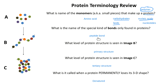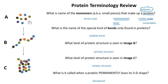Peptide bonds are what I use to build the primary structure. Looking at our three-part picture, each of the little dots represent the monomers of a protein — each represents an amino acid. There's no protein structure in image A because it's just a group of amino acids. When I connect them to each other, like in image B, putting those peptide bonds in between, I've created a protein with primary structure — amino acids in a line.